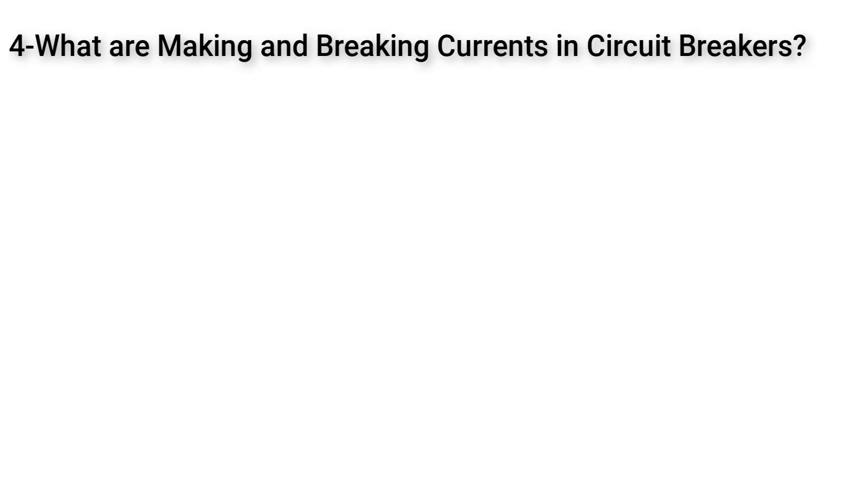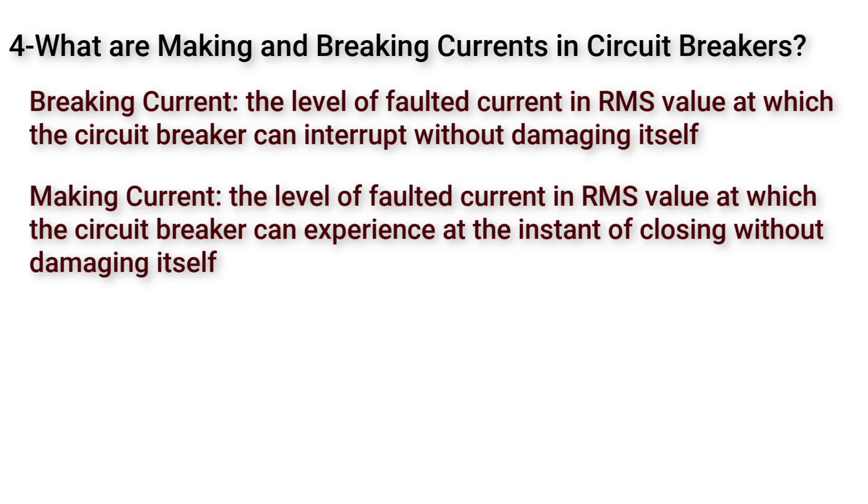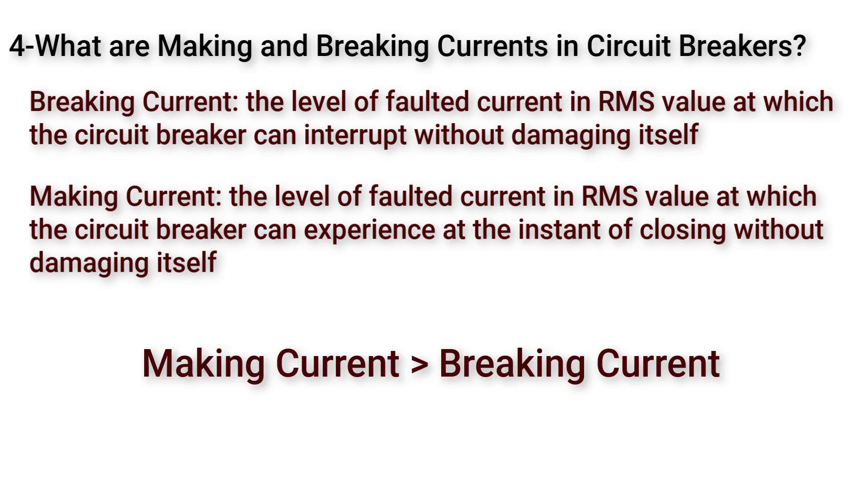What are making and breaking currents in circuit breakers? Breaking current is the level of faulted current in RMS value at which the circuit breaker can interrupt without damaging itself. Making current is the level of faulted current in RMS value at which the circuit breaker can experience at the instant of closing without any damage to itself. So the making current of circuit breaker is usually greater than the breaking current of circuit breaker.